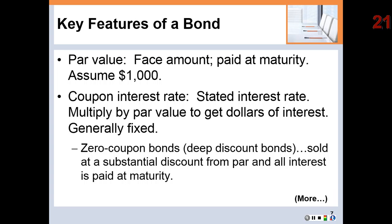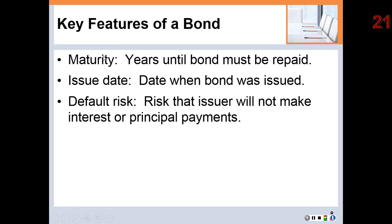Zero coupon bonds, also called deep discount bonds, don't pay interest during the life of the bond. Instead they sell at a deep discount from par value. For example, you pay $600 today and receive $1,000 at maturity — the $400 difference is your interest, received all at once rather than periodically. The maturity of a bond is simply the years until it matures; most bonds mature in 10 to 30 years.